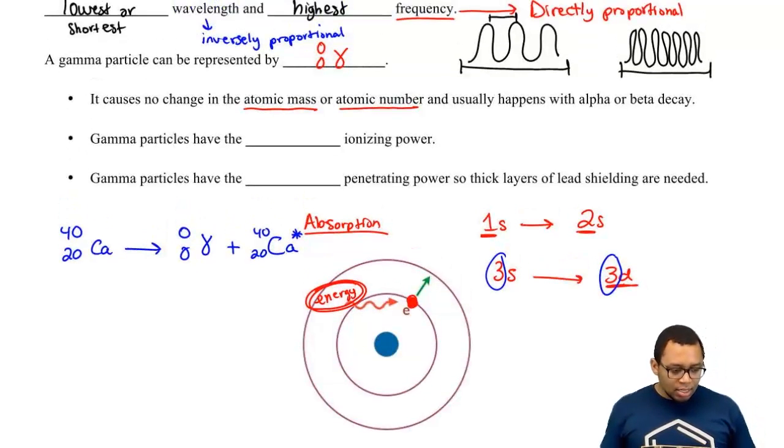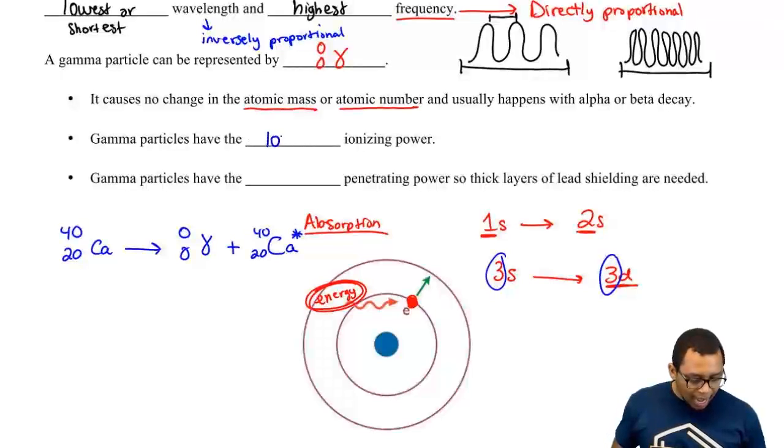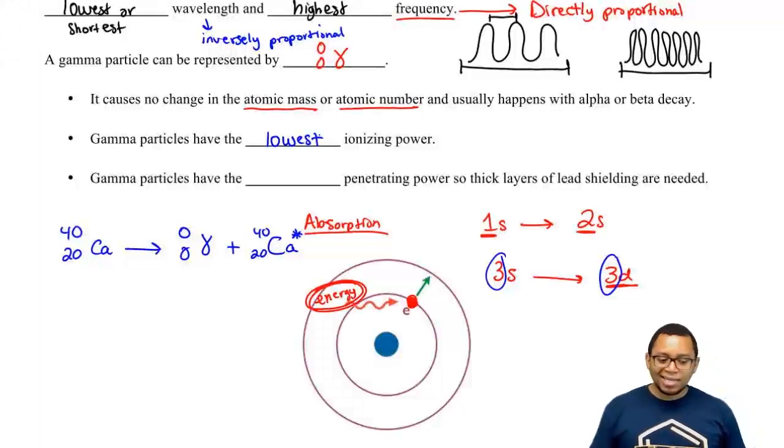Gamma particles have the lowest ionizing power but the highest penetrating power.